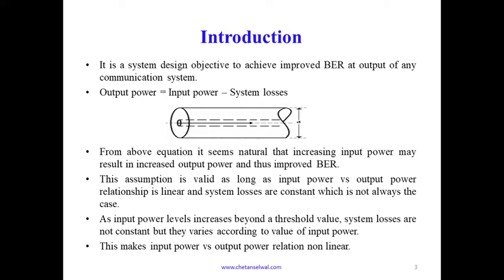In the introduction: whenever we design a communication system, the design objective is to achieve improved bit error rate at the output. Output power is defined as output power equal to input power minus system losses. Input power is given at one end of the optical fiber and output power is received at the other end. It seems natural that increasing input power results in increased output power, since this appears to be a linear relationship — output power is proportional to input power when system losses are constant. But this assumption is valid only as long as the relationship is linear and system losses are constant, which is not always the case.